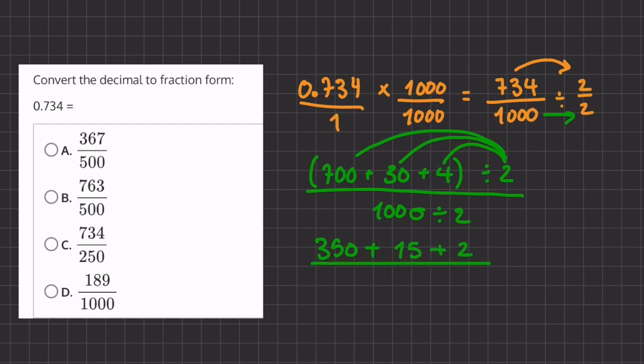So that will be our numerator, and our denominator will be 1000 divided by 2, which is going to be 500. Now let's add up all of our numbers in the numerator.